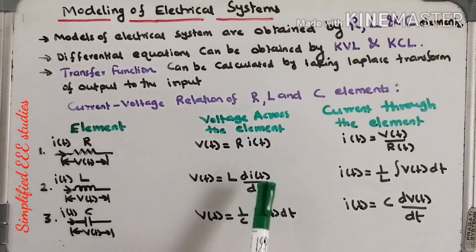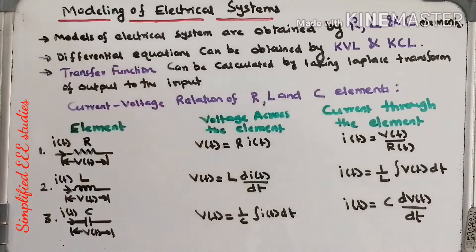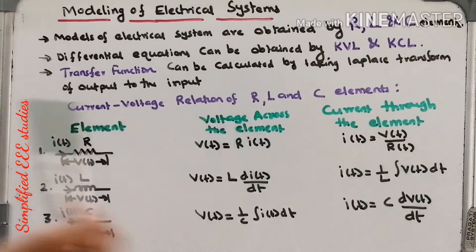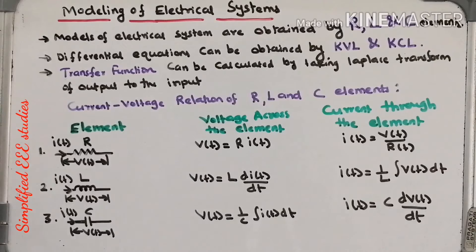From this I need to calculate I(t). How to calculate I(t)? You take the integration on both sides. Then I will be getting 1/L into integral of V(t)dt. This is the relation between voltage and current of inductor.